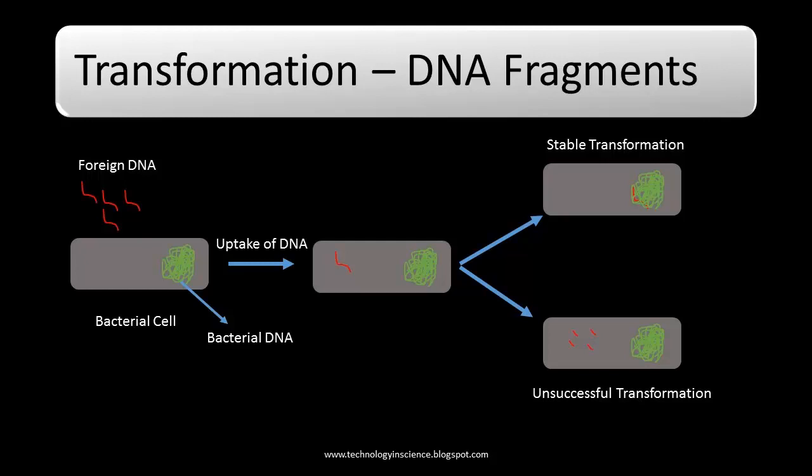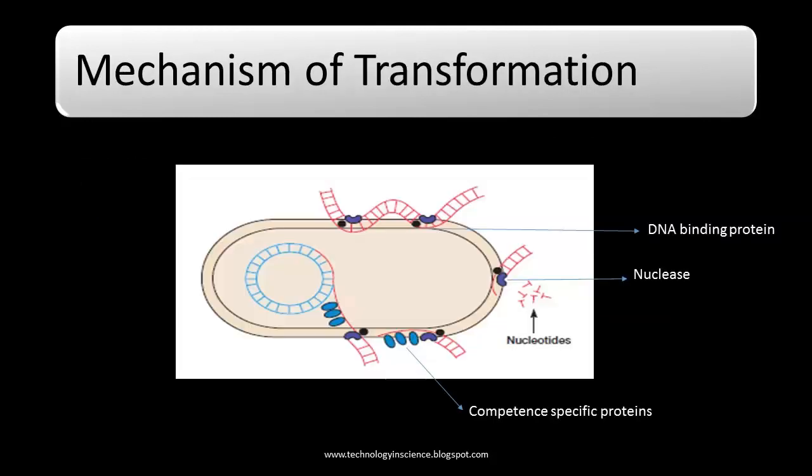Competency is dependent on various conditions and is a complex phenomenon. Bacteria need to be in a certain stage of growth for taking up foreign DNA. For example, Streptococcus pneumoniae becomes competent during the exponential phase when the population reaches about 10 to the power 7 to 10 to the power 8 cells per ml.